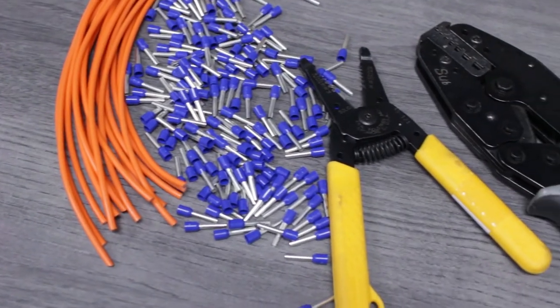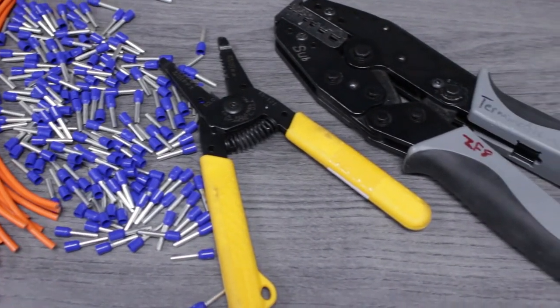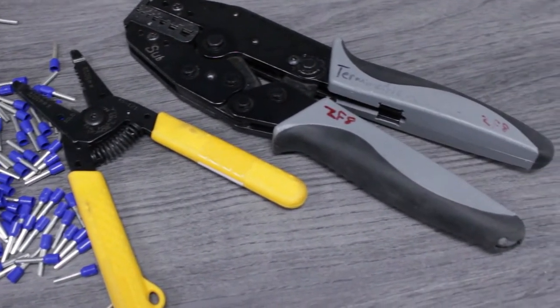We'll be using 14 gauge marine wire, wire ferrules, a compact wire stripper, and a specialty crimper from our production facility.